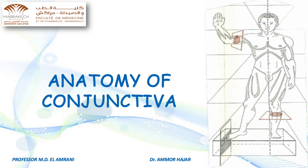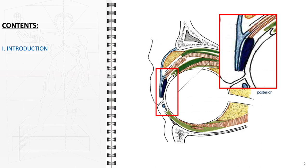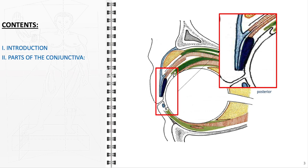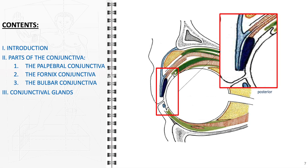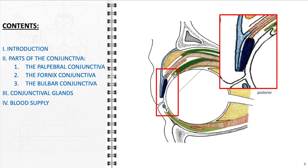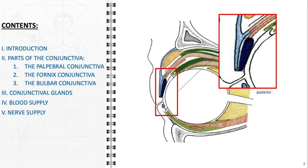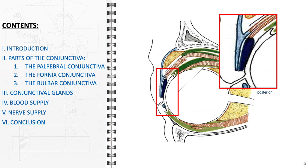In this video, we'll cover the anatomy of the conjunctiva. We'll start with an overview, highlighting its role in ocular health and its importance. Next, we'll identify the different parts of the conjunctiva, look at the conjunctival glands, and discuss its blood and nerve supply. We'll conclude by summarizing the key anatomical features.